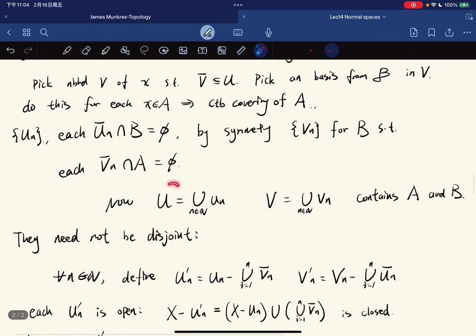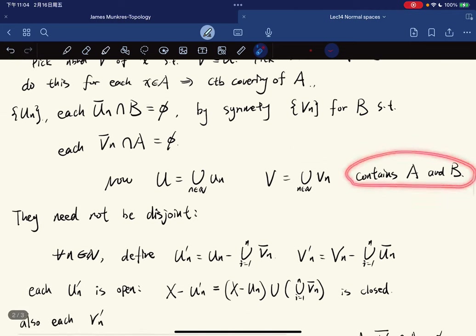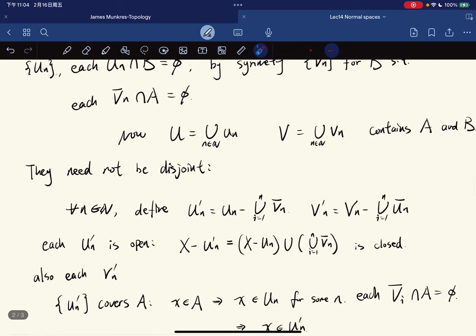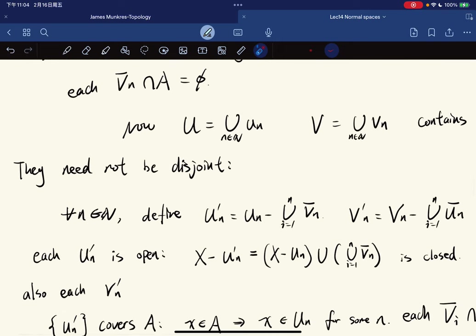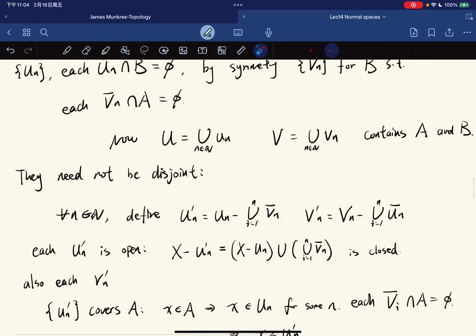Now we just let U be the union of the U_n's, V be the union of V_n's, then we know that they contain A and B. But notice that they need not be disjoint, so we want to make them disjoint.